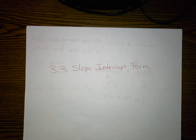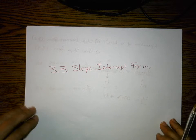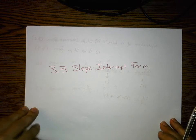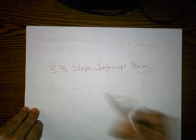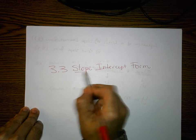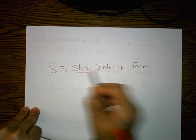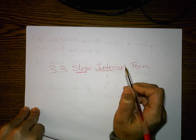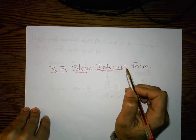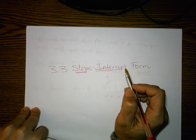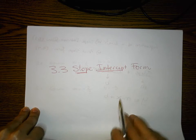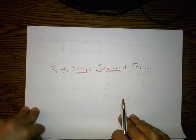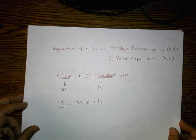All right guys, here's the video for 3.3, slope-intercept form. Remember, we want to know the slope and we want to know the y-intercept. Those are the two pieces of information we need to know in order to create the equation of a line.